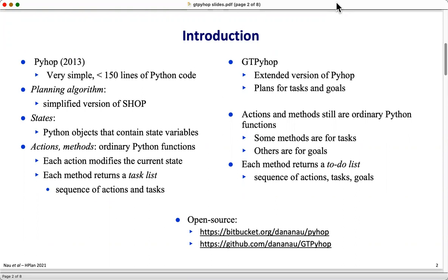The planning algorithm that it uses is a simplified version of the SHOP algorithm. States are represented as Python objects that contain state variables. Actions and methods are ordinary Python functions. Each action modifies the current state, and each method returns a task list which is a sequence of actions and tasks.